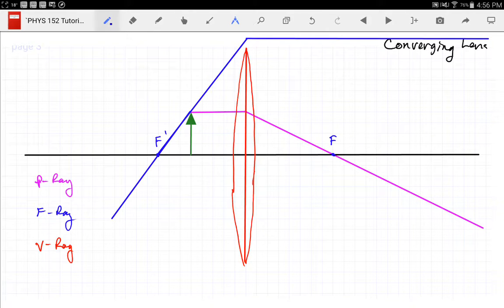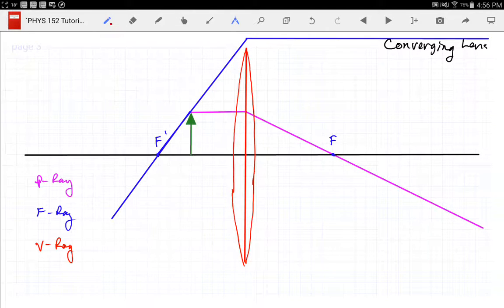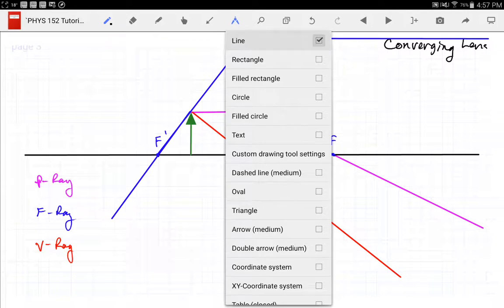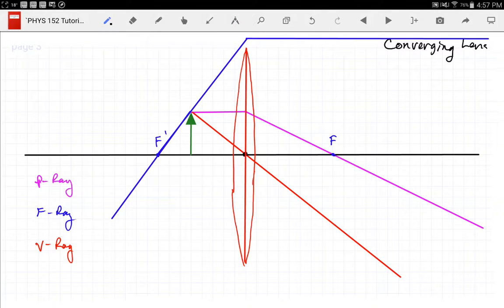Let's do the third ray, and then let's find where the image is. So the third ray is the vertex ray. The vertex ray starts at the tip of the object, goes through the vertex, and then keeps going. I will label the vertex here in black just so we have it labeled. So that there is the vertex V.